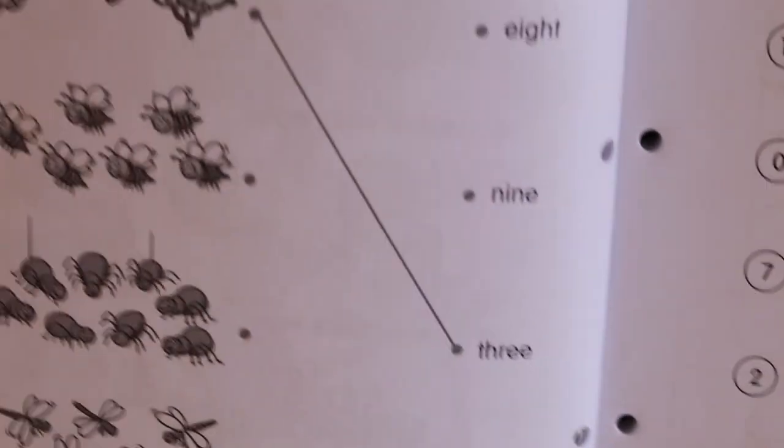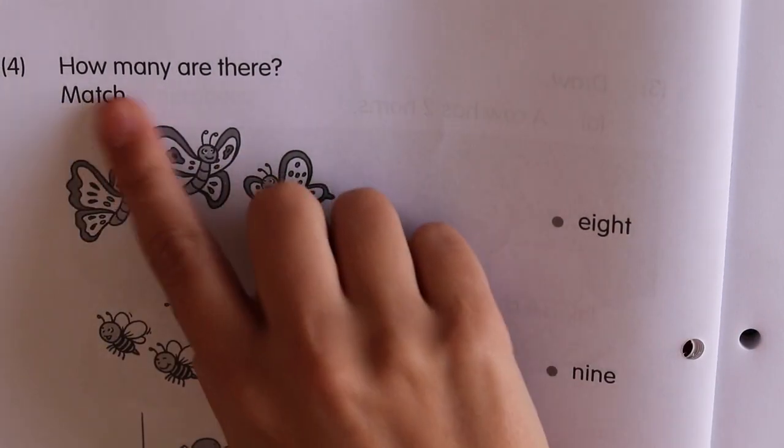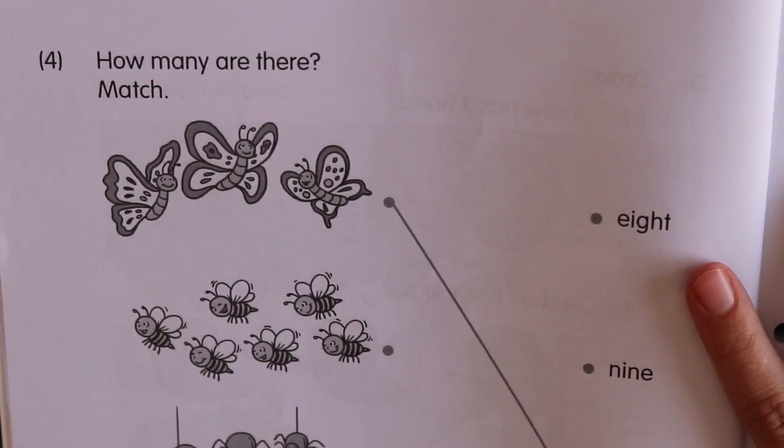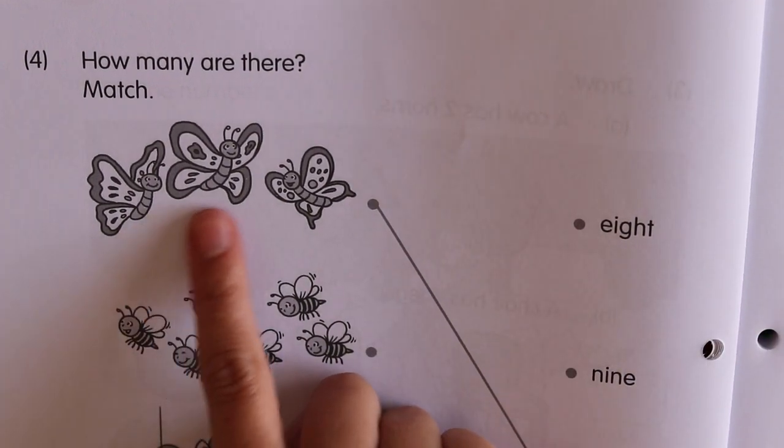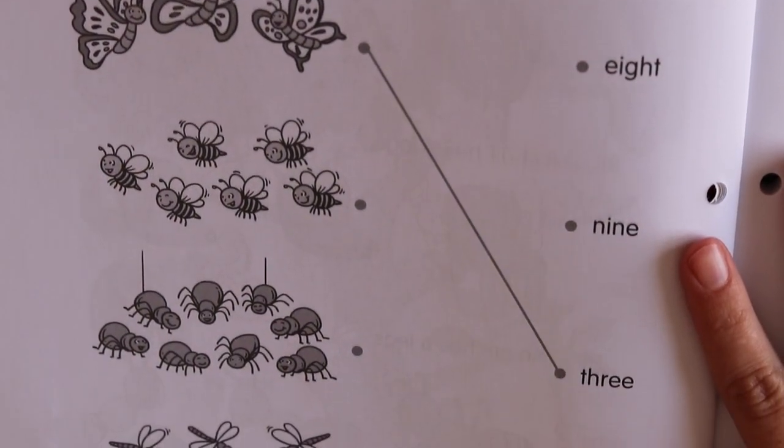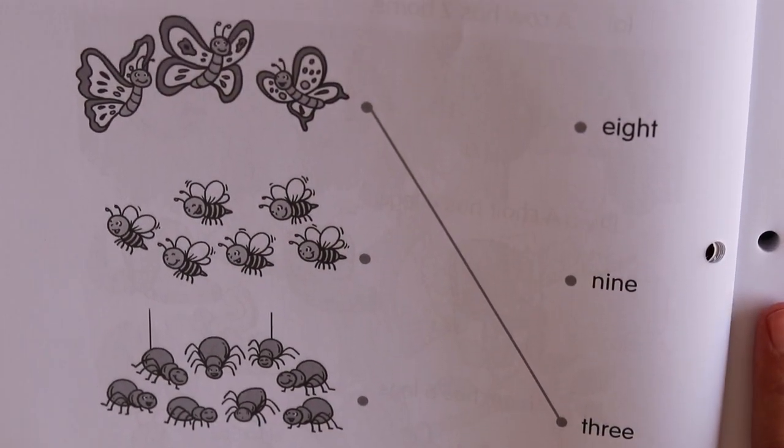Let's go to page four. How many are there? Match. So you need to count how many there are and then match it with a word. So this one they've done for us. There were three butterflies. One, two, three.